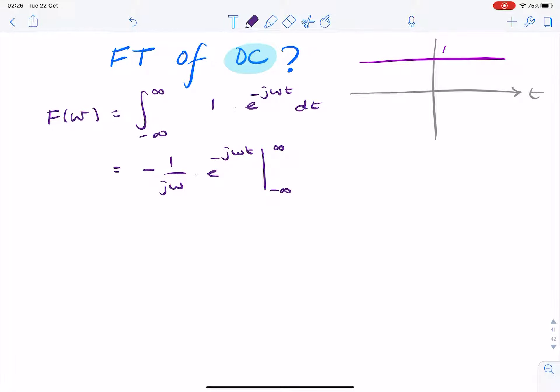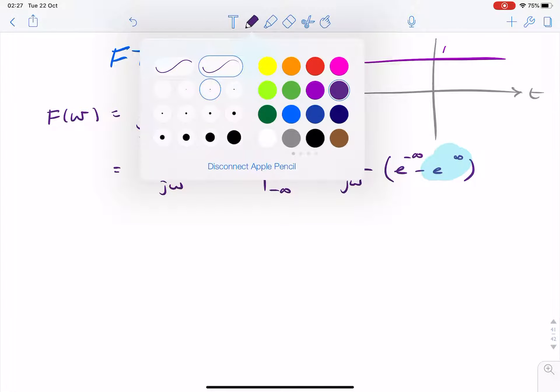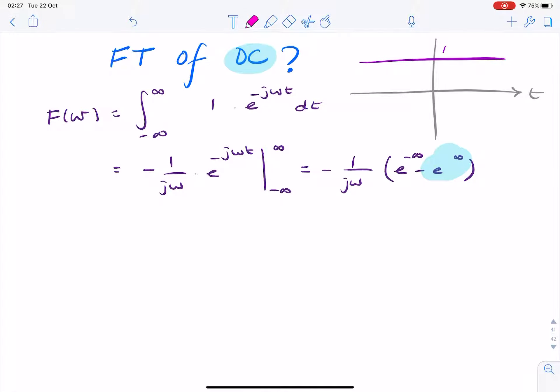That's the easy bit. It gets harder when you want to substitute limits because then you have e to the minus infinity minus e to the minus minus infinity. And we can remove the minus signs.